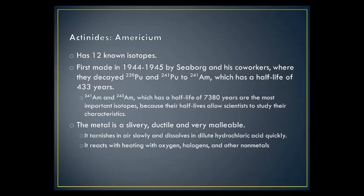Americium has 12 known isotopes. It was first made in 1944–1945 by Seaborg and his co-workers, who decayed ²³⁹Pu and ²⁴¹Pu to produce ²⁴¹Am, which has a half-life of 433 years. ²⁴¹Am and ²⁴³Am, with a half-life of 7380 years, are the most important isotopes because their half-lives allow scientists to study their characteristics. The metal is silvery, ductile, and very malleable; it tarnishes in air slowly and dissolves in dilute hydrochloric acid quickly. It reacts upon heating with oxygen, halogens, and other non-metals.